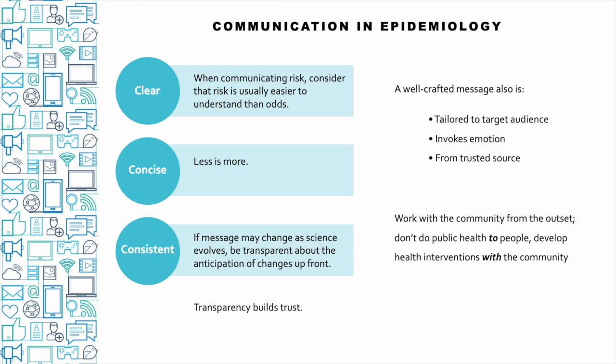In general, effective public health communication should be clear, concise, and consistent. When communicating risk to the public, remember that risk is usually easier for people to understand than odds. It's also good practice to never use acronyms without first writing out the full term and putting the acronym in parentheses. The APA guidelines have a list of acronyms you're allowed to use, which serves as a good guideline even for non-academic writing.